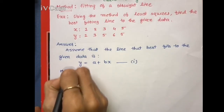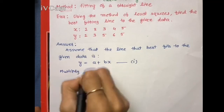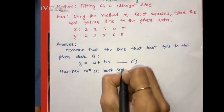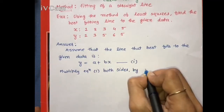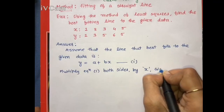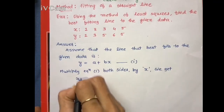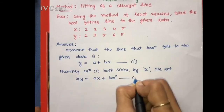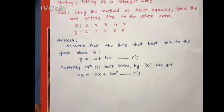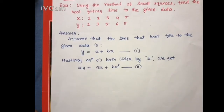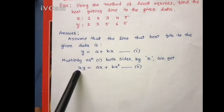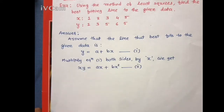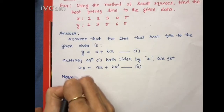To write down the normal equations, we multiply equation 1 both sides by x. We get xy = ax + bx². This is equation number 2. Now to write down the normal equations, we apply summation to both sides of equations 1 and 2.